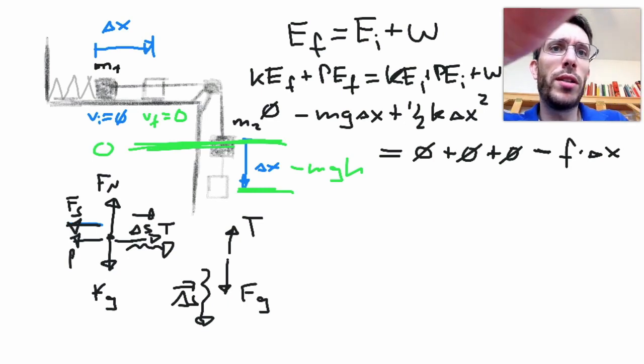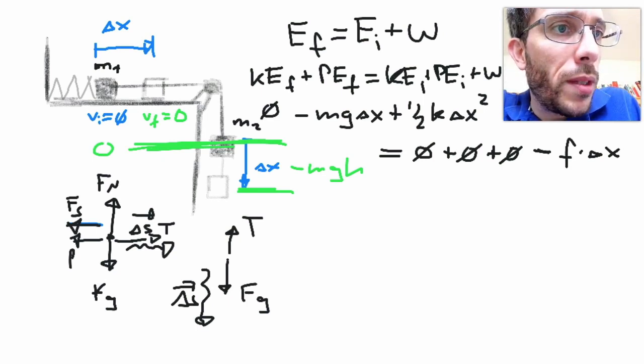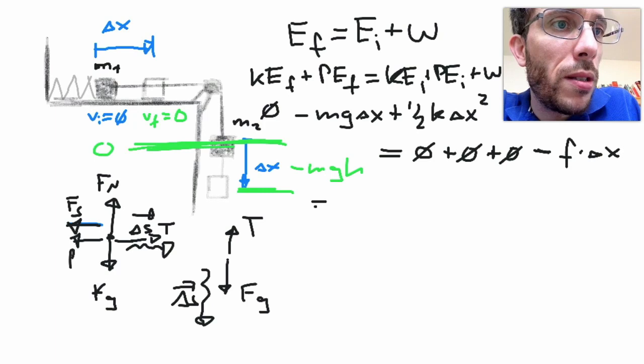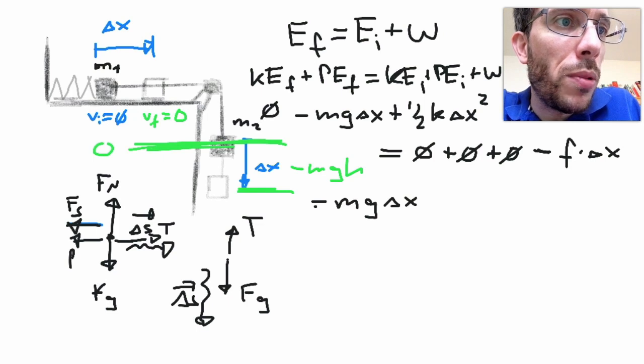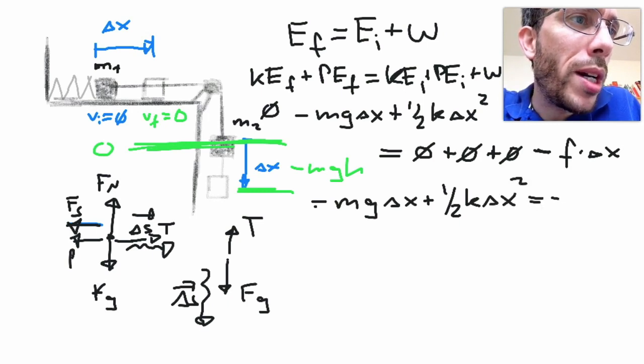So let me rewrite this a bit more clean. So we have minus mg delta x plus 1 half k delta x squared is minus force of friction times delta x.